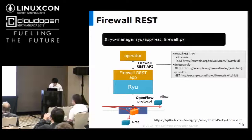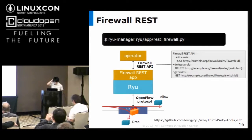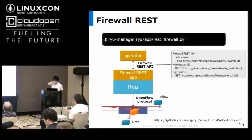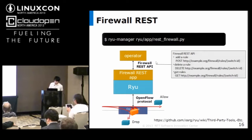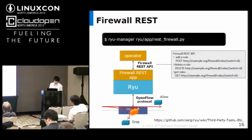This application provides a simple firewall function. The network operator sends firewall rules to Ryu via the firewall REST API. The firewall REST application installs OpenFlow rules into the OpenFlow switch. So you can add firewall function to the switch easily with this application.